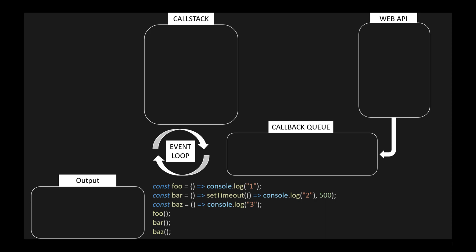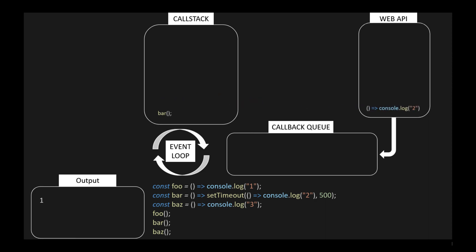Now let's see the JavaScript runtime in action with asynchronous tasks. I've created three functions: foo, bar, and baz. All functions are independent of each other, but now we have a setTimeout function added in bar that will execute after 500 milliseconds. When we execute this code, foo is called first and added to the call stack. It has a console log which is added, executed, removed from the call stack, logging 1 to the console. Then foo is removed. Now bar is called and added to the call stack. It has a setTimeout function, which is added to the call stack and then executed. Because setTimeout is asynchronous, it's added to the web APIs and removed from the call stack. Then bar is removed from the call stack.